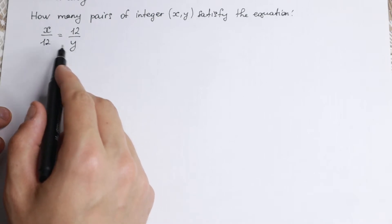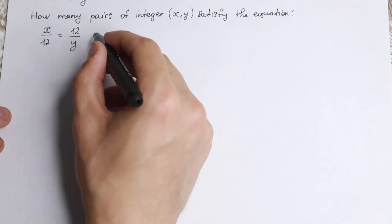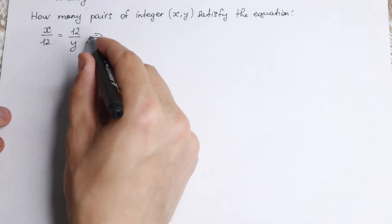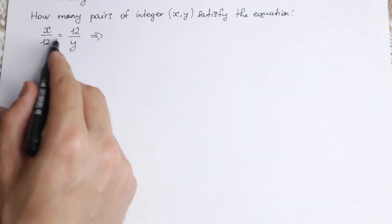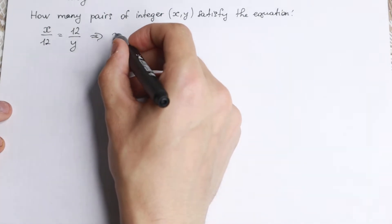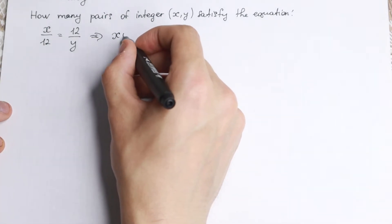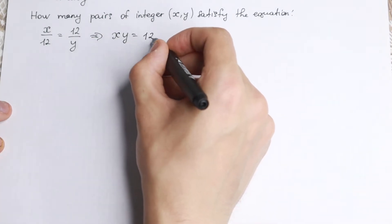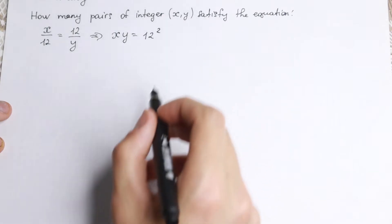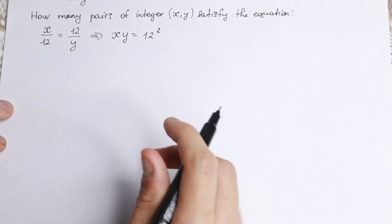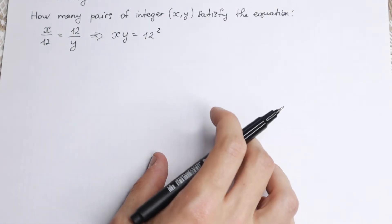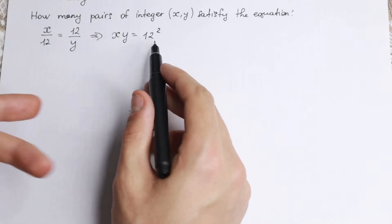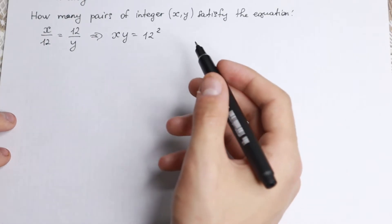First, let's use cross-multiplying. If we multiply using the cross-multiplying technique, we will have x times y equal to 12 squared. And of course we can't simplify this further because we have x and y and a constant on the right.